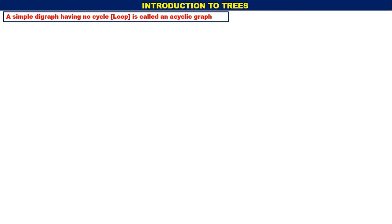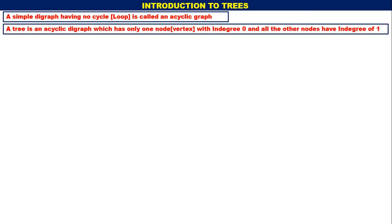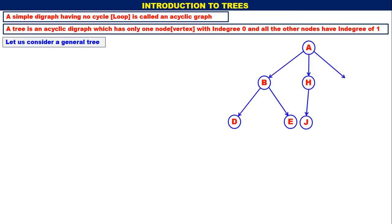A simple digraph having no cycle or loop is called an acyclic graph. A tree is an acyclic digraph which has only one node with indegree 0 and all other nodes having indegree of 1. Consider this general tree.